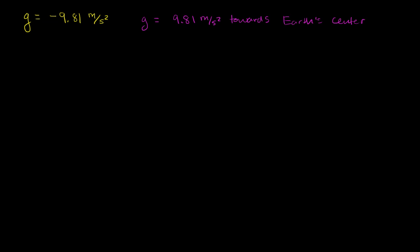What I want to do in this video is think about the two different ways of interpreting lowercase g, which many textbooks will give you as either 9.81 meters per second squared downward or towards the Earth's center, or sometimes it's given with a negative quantity that signifies the direction, which is essentially downwards — negative 9.81 meters per second squared.